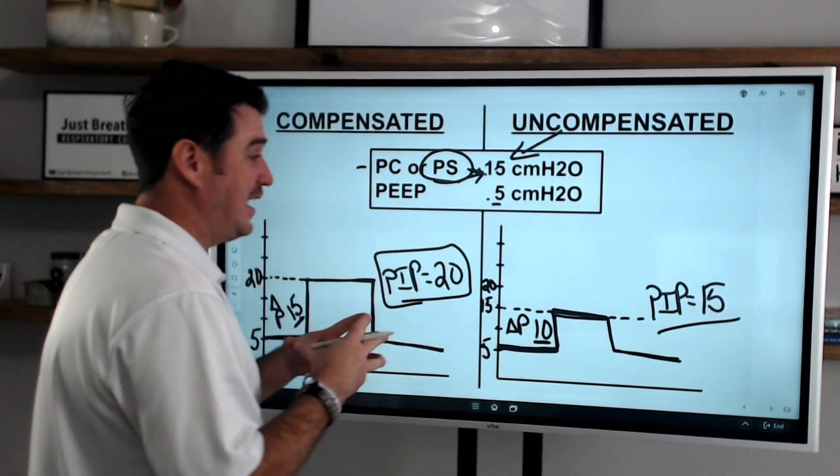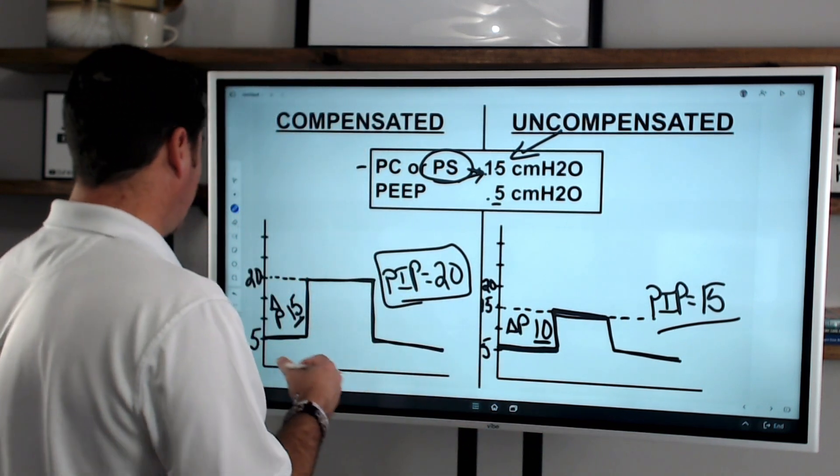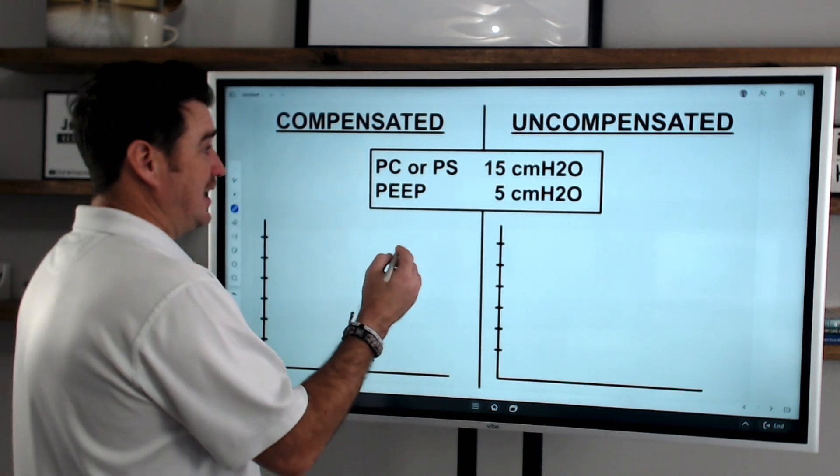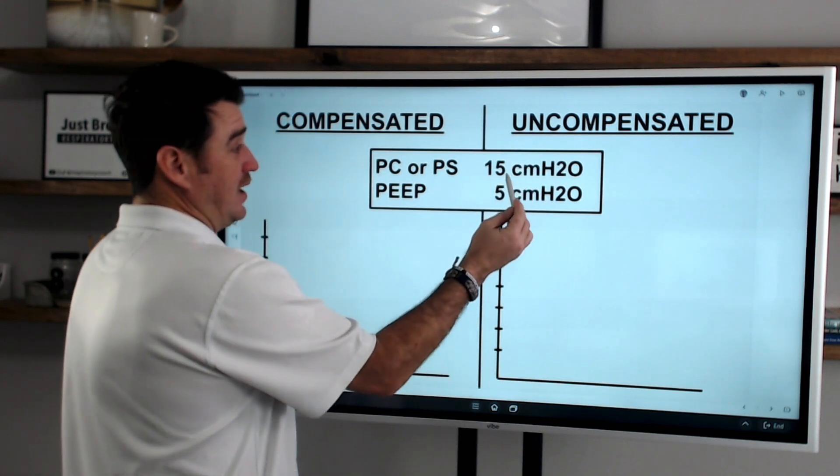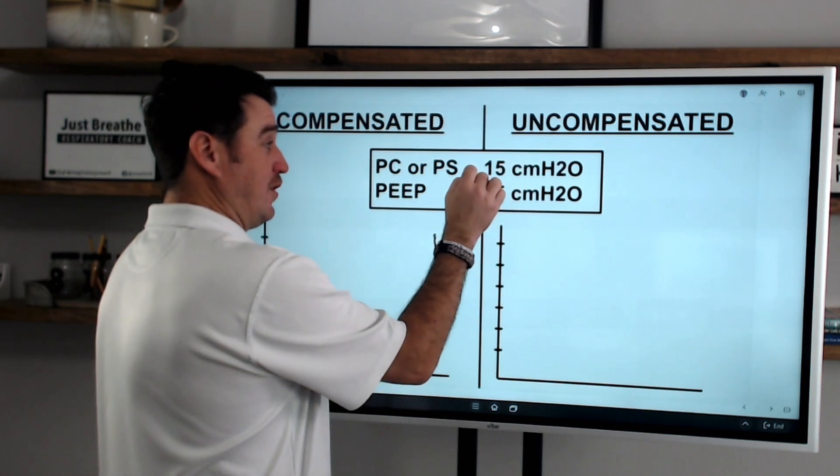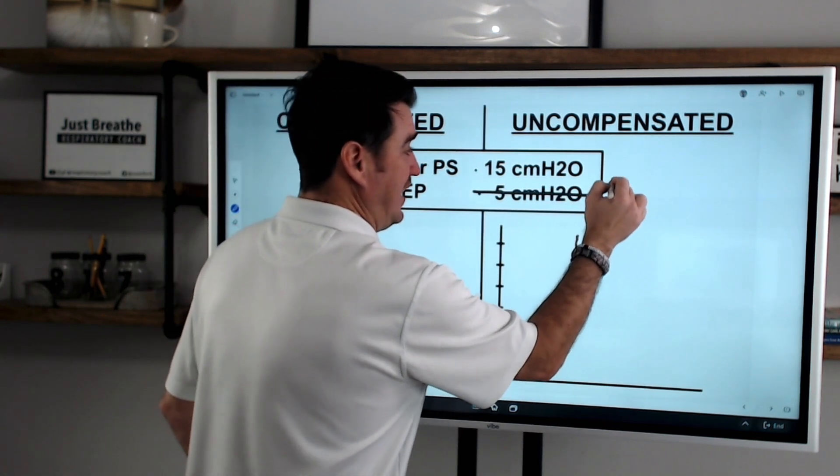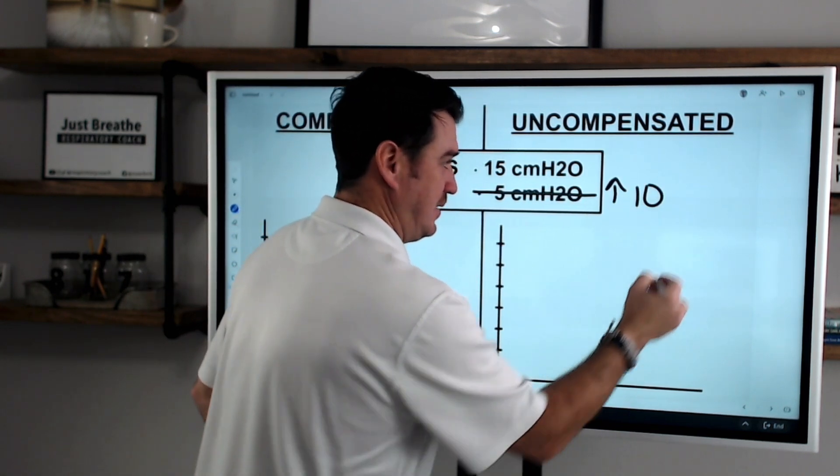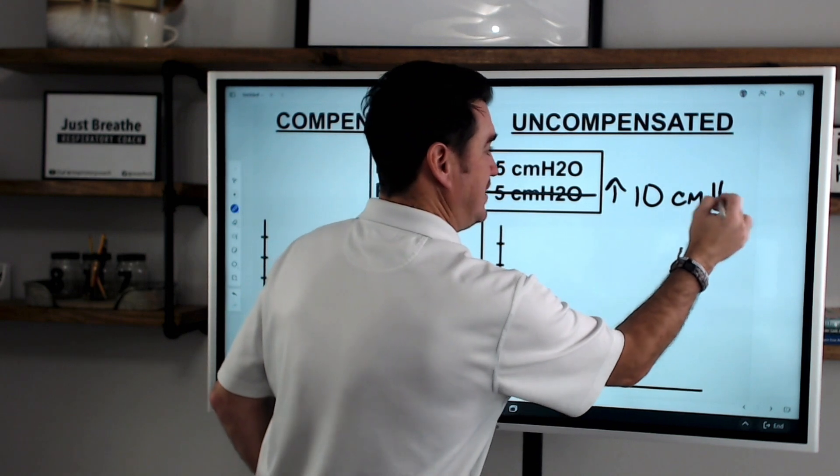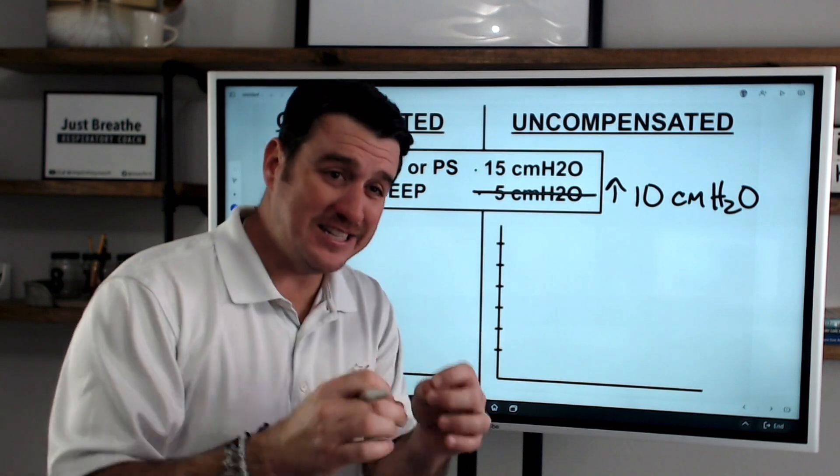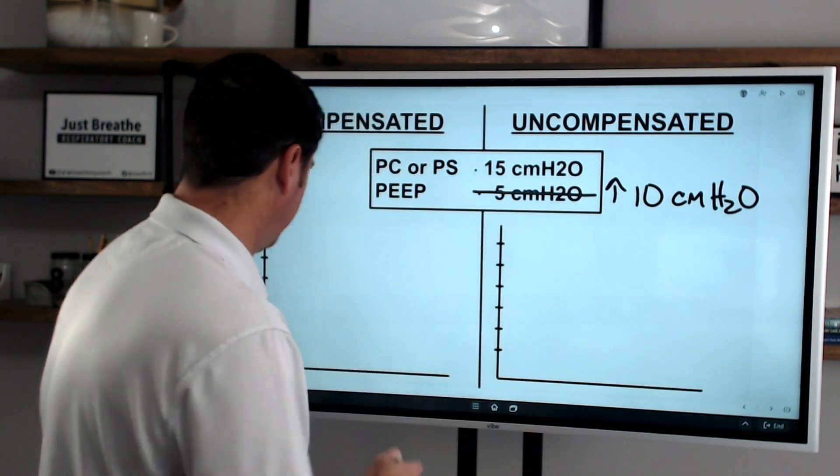Okay? So you have to recognize how that works and how it functions. Now let me give you one other example here on how this applies. Let's say that we are on a pressure control of 15 and a PEEP of 5, but we want to change this. We want to increase the PEEP to 10. Okay? So we are going to raise the PEEP to 10 centimeters of water pressure. This is the most important part of why this is important to understand.